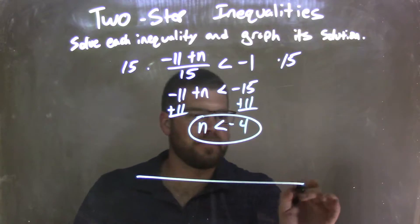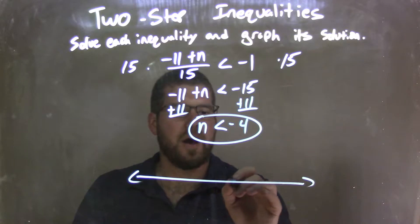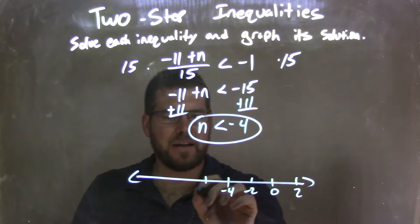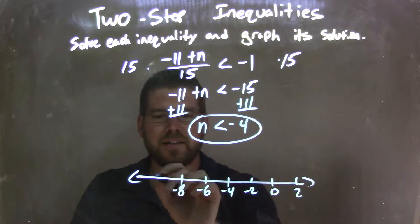So now I need to graph it. I'll make a little graph here. Let's put negative 4 here and go by 2's: negative 2, 0, 2, negative 6, negative 8, negative 10.